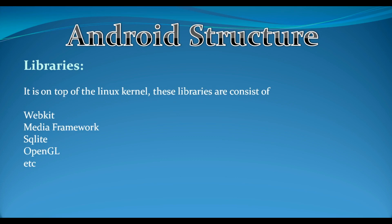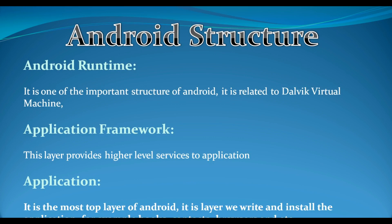Another layer is libraries. This layer sits on top of the Linux kernel, and these libraries consist of WebKit, Media Framework, SQLite, OpenGL (Open Graphics Library), and some other libraries. Another important layer is Android Runtime, which is related to the Dalvik virtual machine. The Dalvik virtual machine is like a Java virtual machine, specially designed for Android, and by it, applications can run on Android devices. The Dalvik VM uses the device's underlying Linux kernel to handle low-level functionality including security, threading, and memory management.